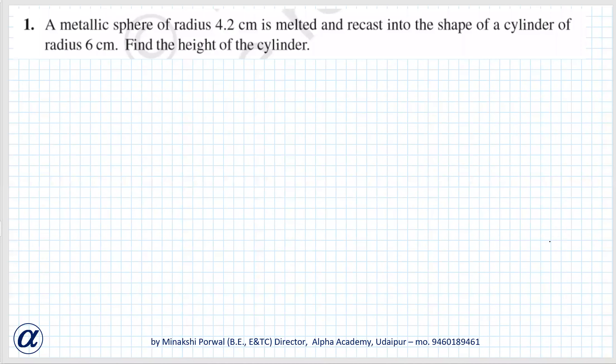Exercise 13.3, question number 1: A metallic sphere of radius 4.2 centimeter is melted and recast into the shape of a cylinder of radius 6 centimeter. Find the height of the cylinder.